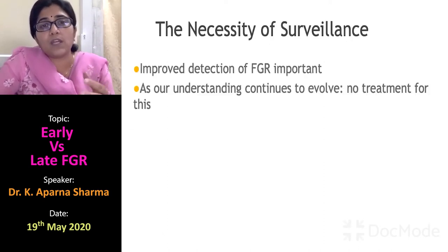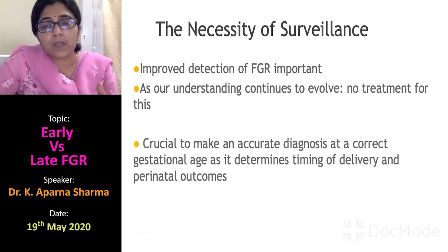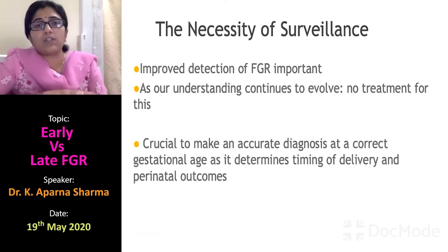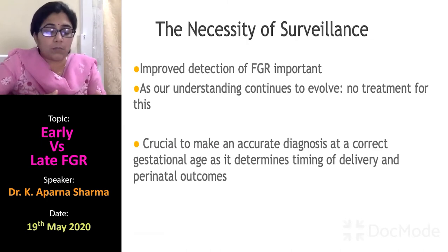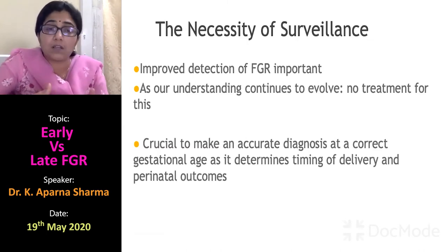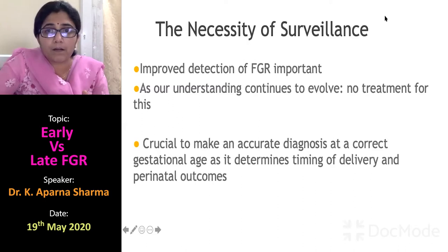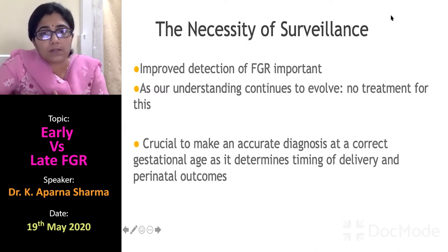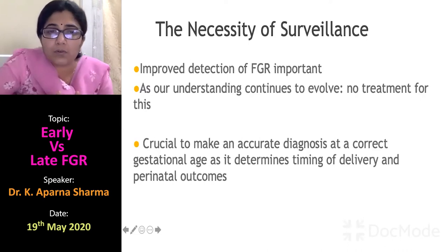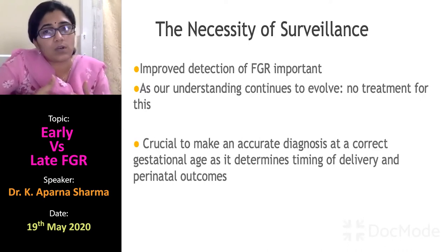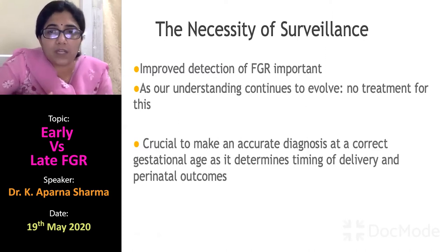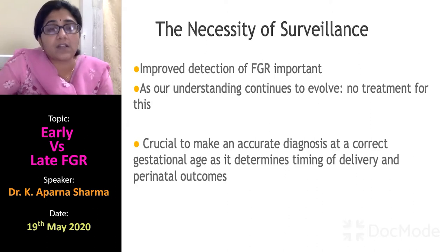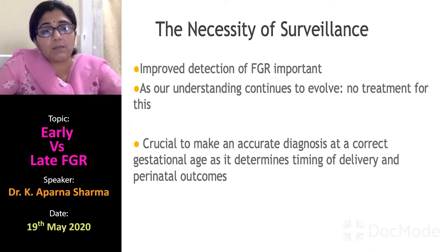As we go on, we'll talk more about the difference between SGA and FGR, early versus late. Most importantly, why do we have to talk about it? With increasing improvement in antenatal care, we are increasingly able to detect small babies. But even if we detect them, we are not able to treat them — whatever the etiology. So it is crucial to make an accurate diagnosis at the correct gestational age, as it determines the timing of delivery and perinatal outcomes.